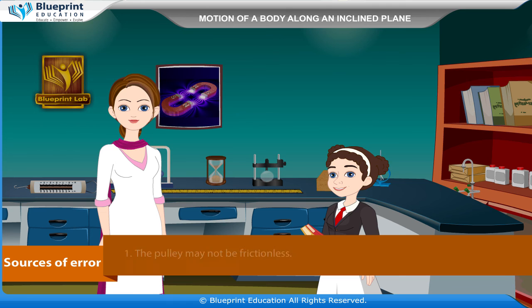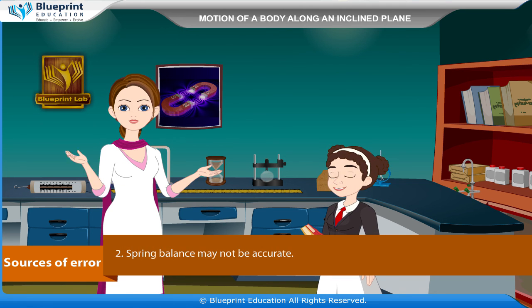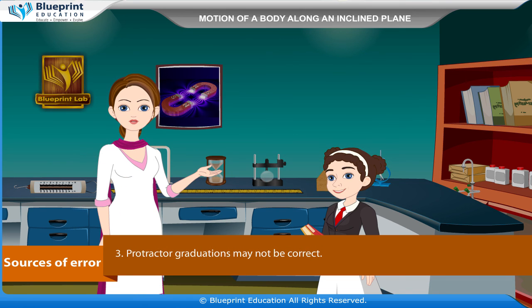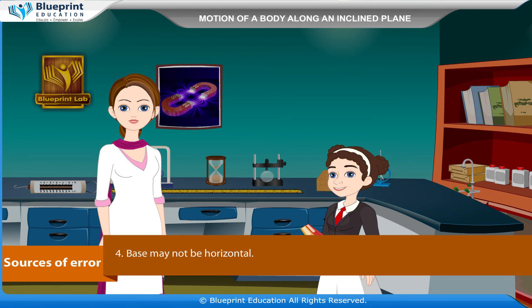Sources of Error: The pulley may not be frictionless. The spring balance may not be accurate. Protractor graduations may not be correct. The base may not be horizontal.